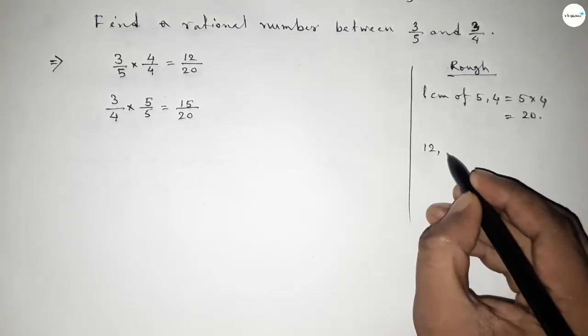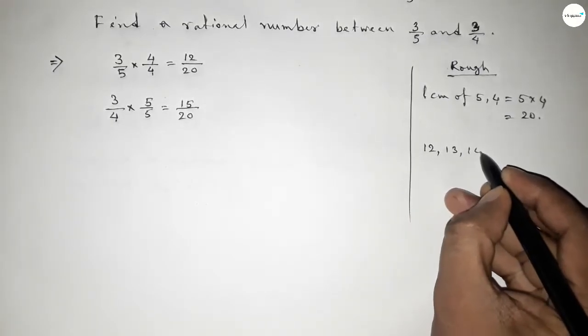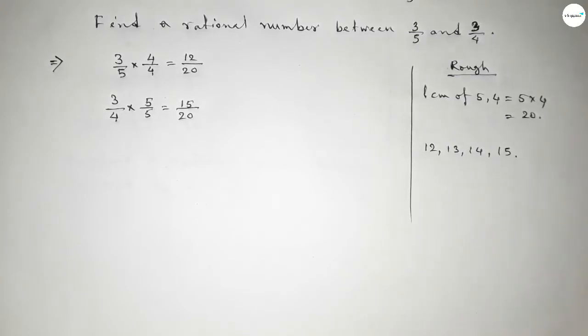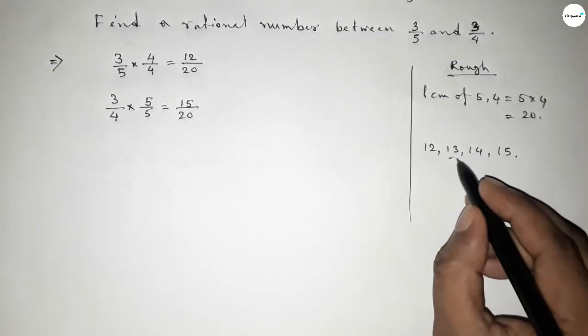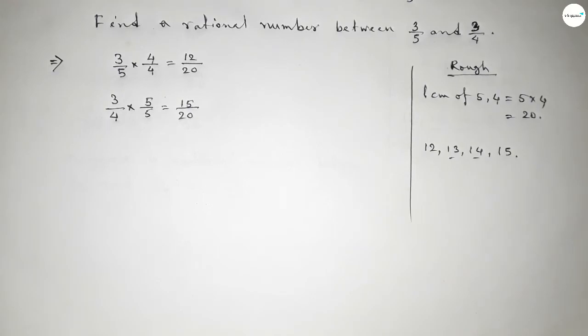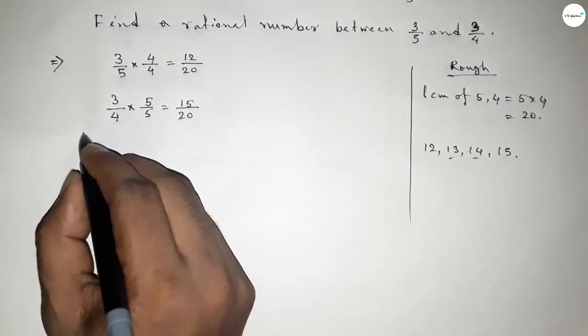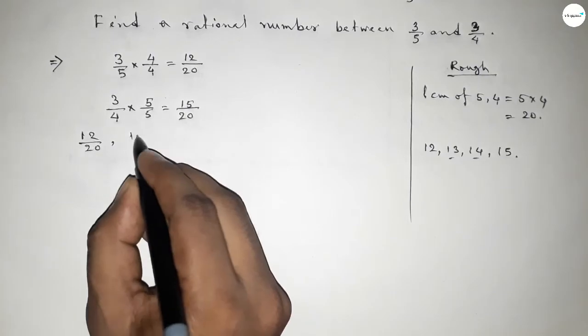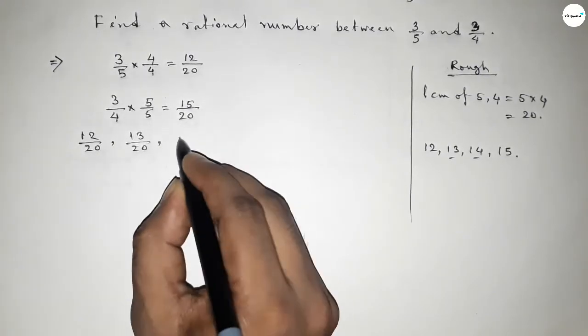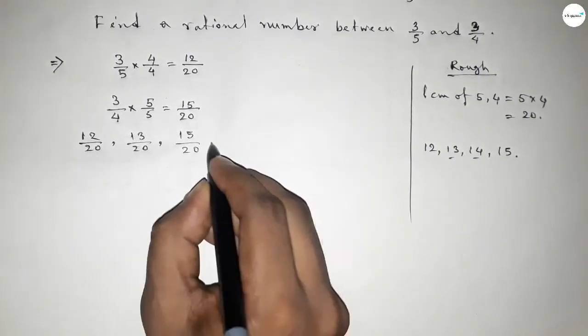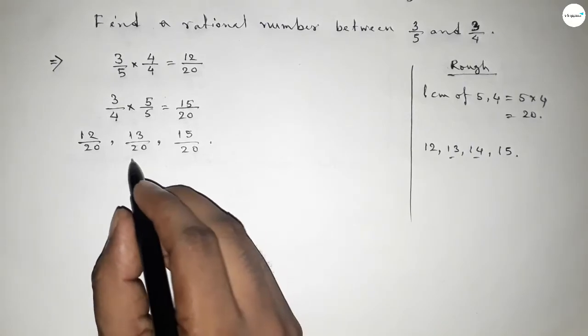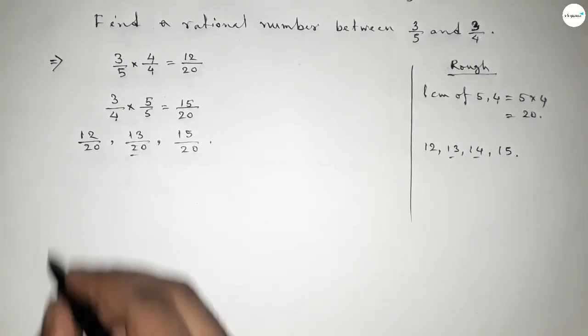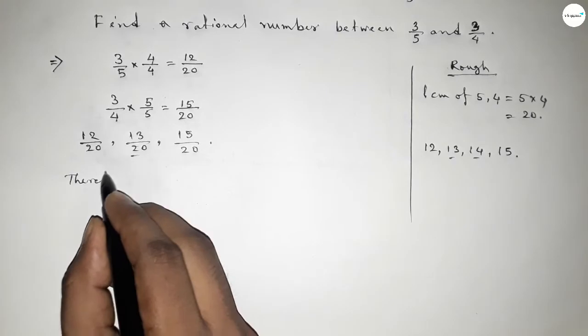Now between 12 and 15, we can find two natural numbers, but here we have to find a rational number. So we can take 13 or 14. Here I am going to take 13 to form a rational number. You can take 14 to form a rational number.